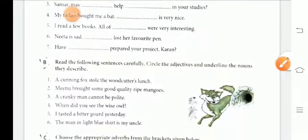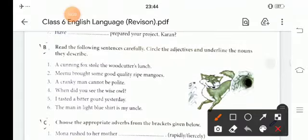Now, in the second sentence, what you have to do? You have to read the following sentence very carefully. Then we have to circle the adjective. The adjective will be circled and the noun will be underlined.